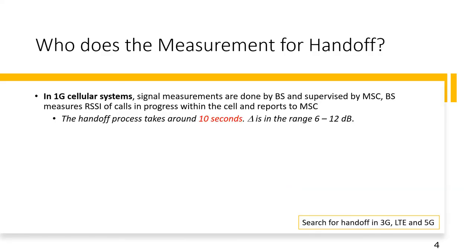Who does the measurement for handoff? In the first generation of cellular systems, signal measurements are done by the base station and supervised by the Mobile Switching Center (MSC). The base station measures the RSSI of calls in progress within that specific cell and reports to the MSC. The handoff process takes about 10 seconds in the first generation, and delta is in the range of 6 to 12 dB above the minimum usable received power.